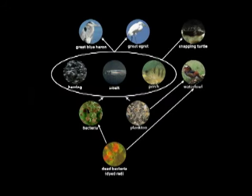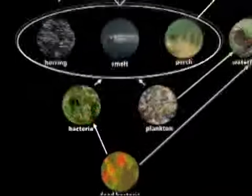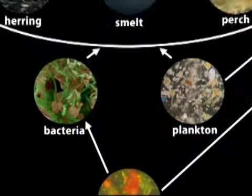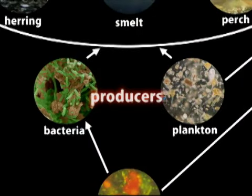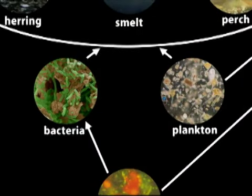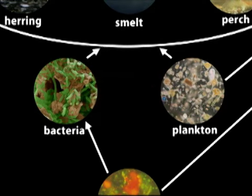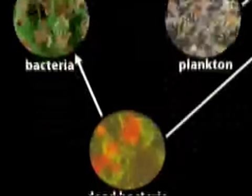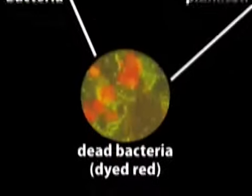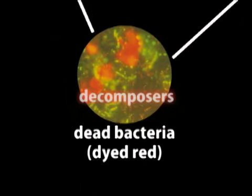The most basic organisms on the food web are the bacteria and plankton, otherwise known as the producers, and are also called autotrophs. They obtain energy from chemosynthesis, therefore they make it themselves, hence them being called autotrophs. Some bacteria even feed off other bacteria, making them decomposers.